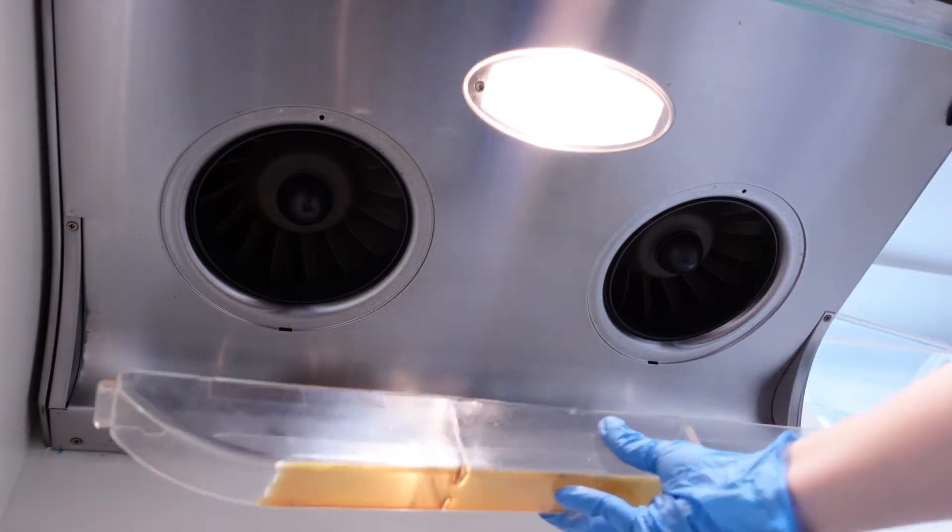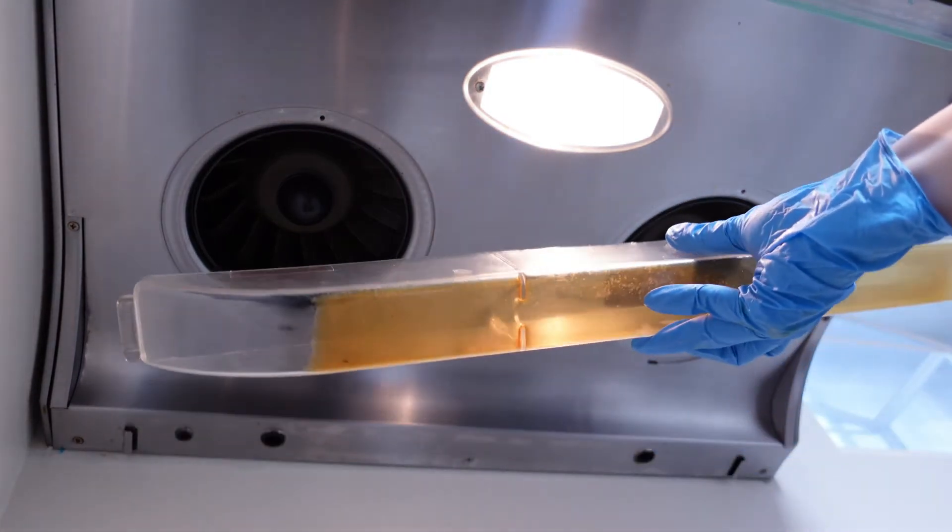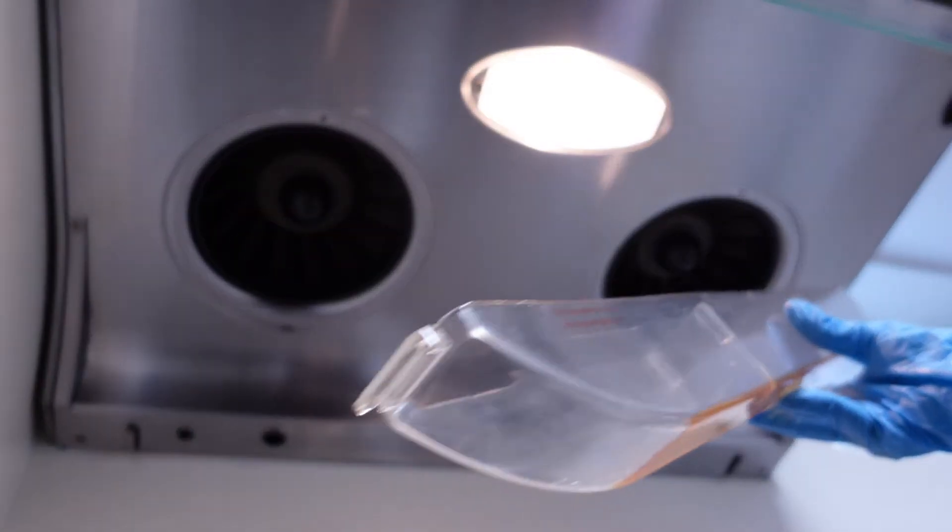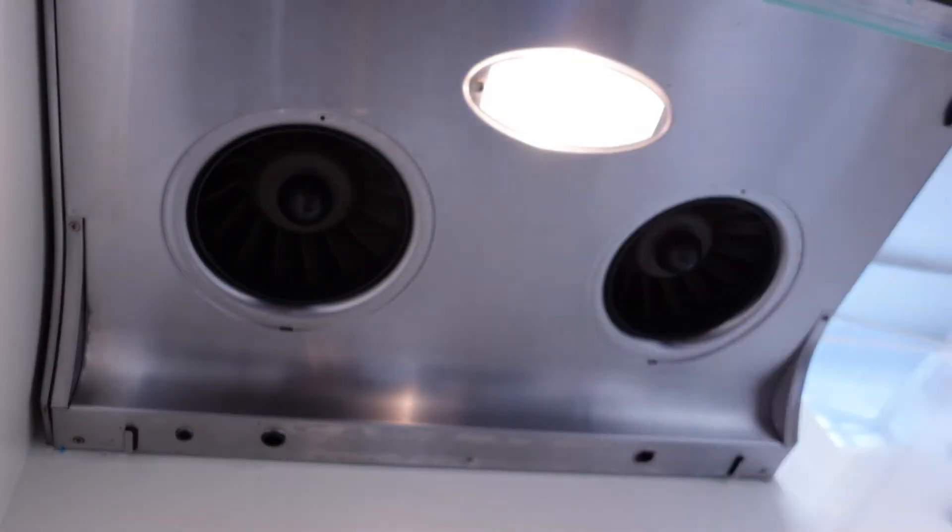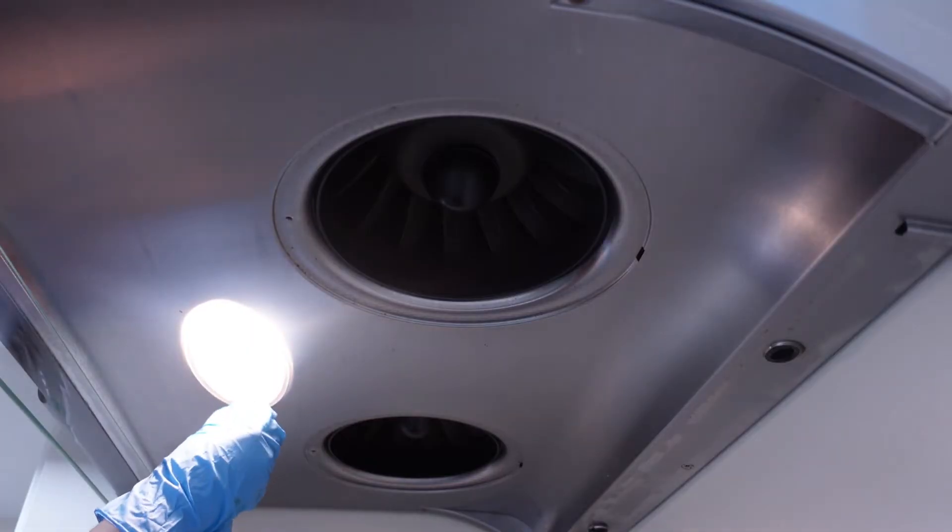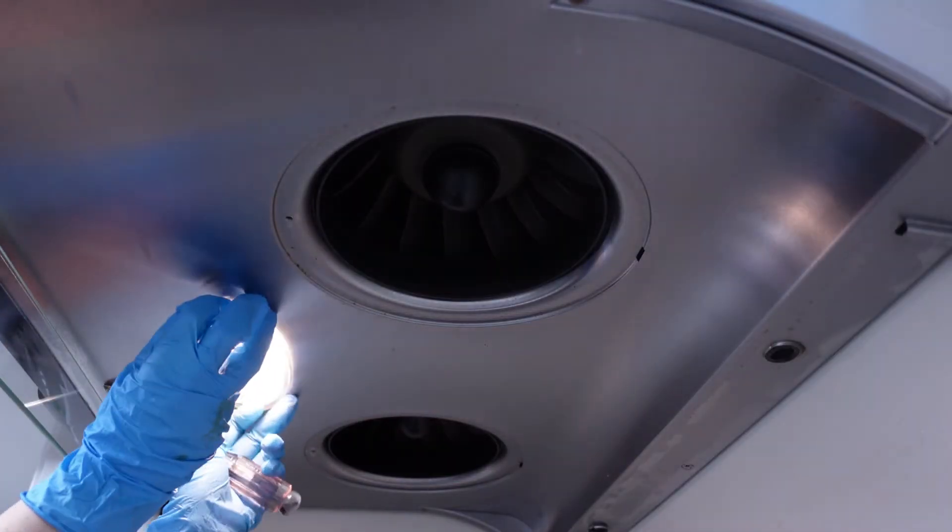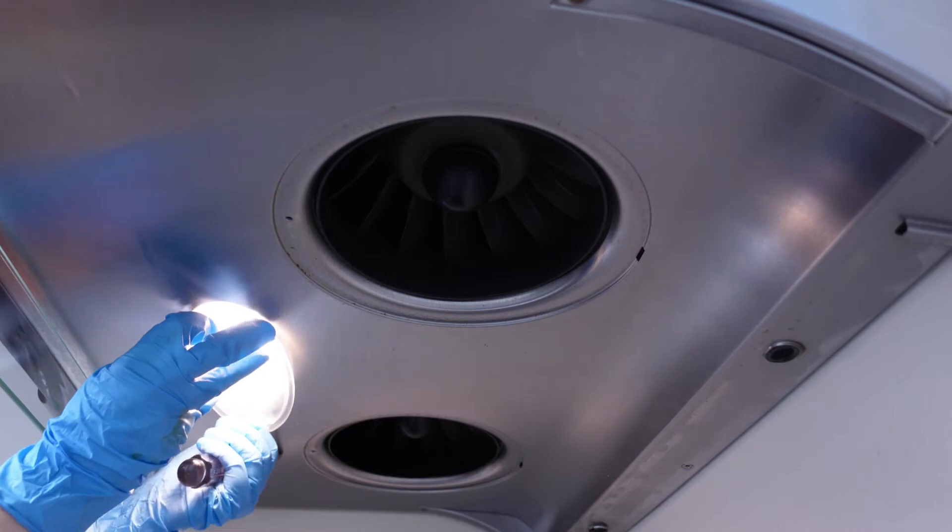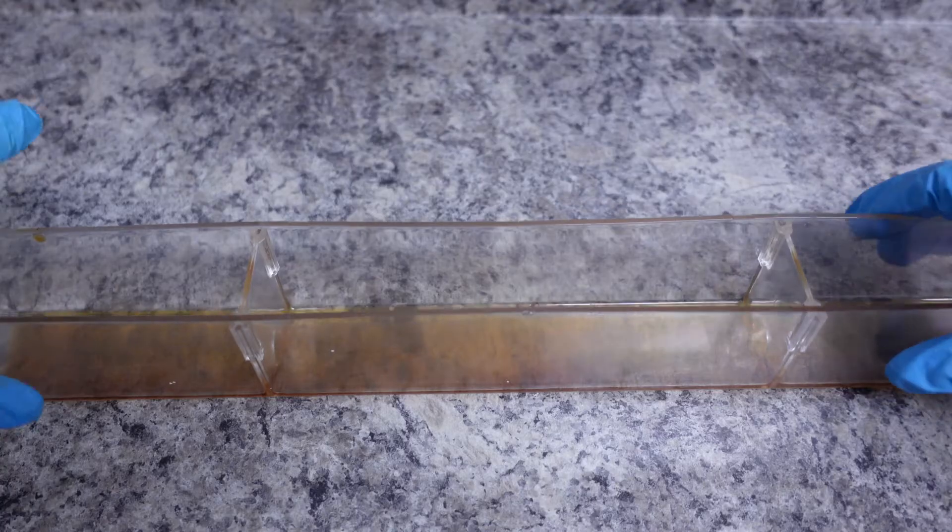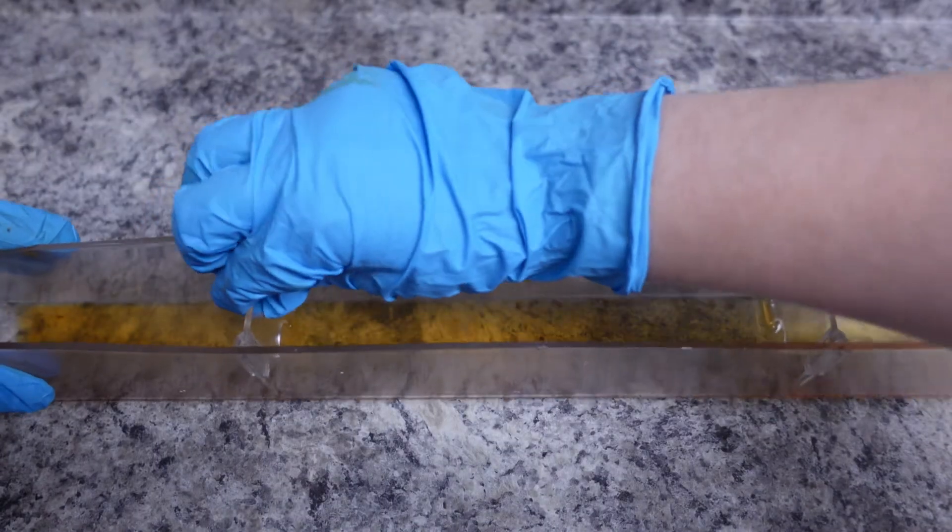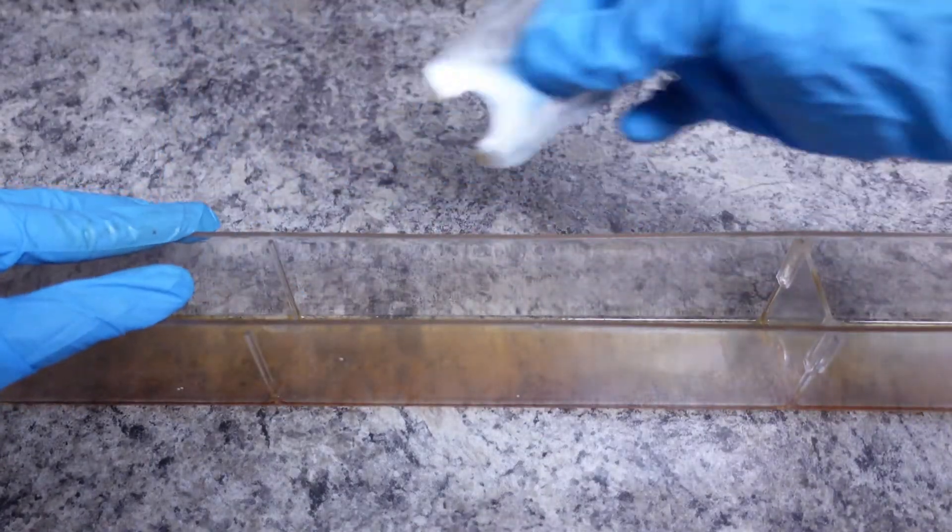Then I remove the main grease catcher which simply slides to the front, then the bulb cover. This catcher has two dividers. I'll put those ones to soak too.